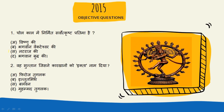Chol Kaal mein sarwadhik sundar murtiyan Nataraj Shiv Ji ki hain, jo ki Chol Kaal mein bahut badi sankhya mein milti thin. Jo ki Chol Kaal ka sarvashreshtha udaharan hai. Pehle question ka jo answer hai, Nataraj Ji ki, aur image mein bhi aap dekh sakte hain jo ki Chol Kaal mein Baphan Nataraj Ji ki murti hai.